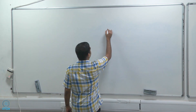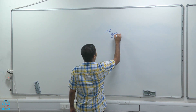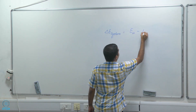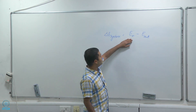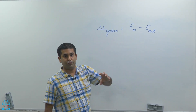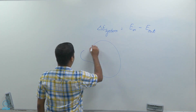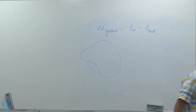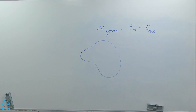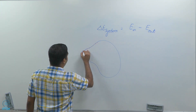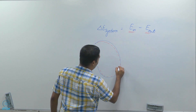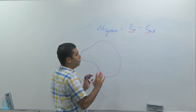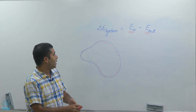So what is the first law again? We write that as delta E system equals E in minus E out. This is energy coming into the system, this is energy going out of the system, and this is the change in energy of the system. Which means that if my system looks like this, I have to look for E in and E out only at the boundaries.